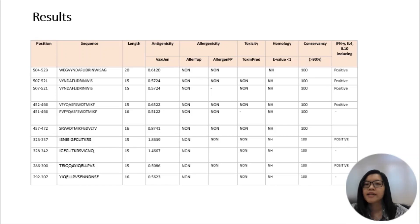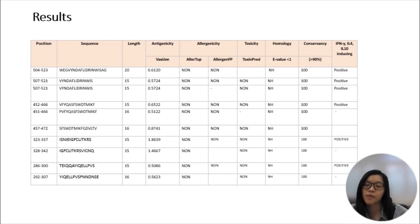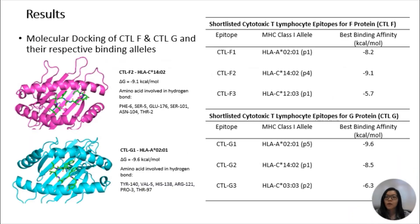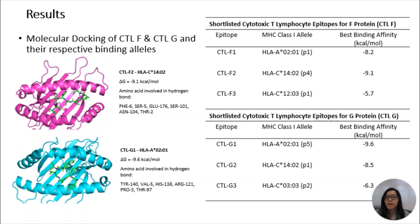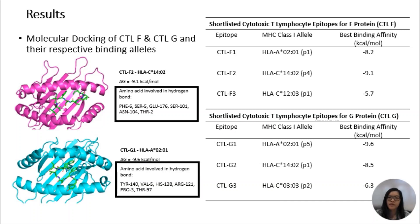Top candidate epitopes are shown in this table. The epitopes fulfilled all the preliminary screening parameters of having antigenicity more than the threshold of 0.5 and being non-allergen, non-toxic, highly conserved, and non-homologous with any human proteins. Furthermore, we used docking methods to validate the efficacy of selected epitopes in binding with their respective HLA alleles. The epitopes along with their respective docking alleles, binding affinity, interactions, and residues involved in hydrogen bonds are shown in this figure.